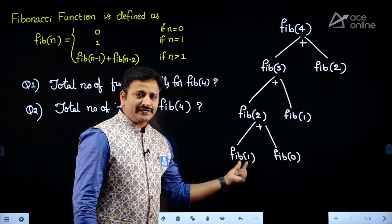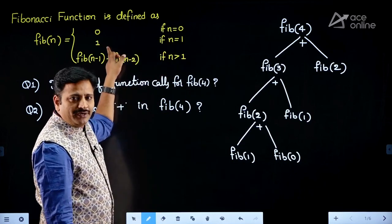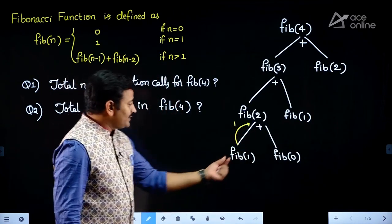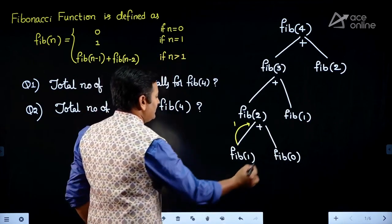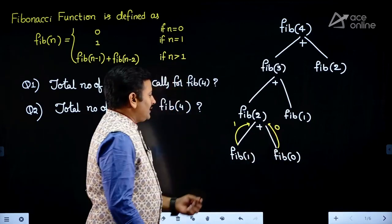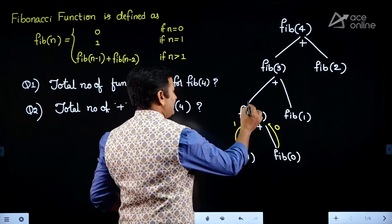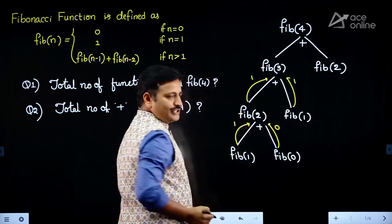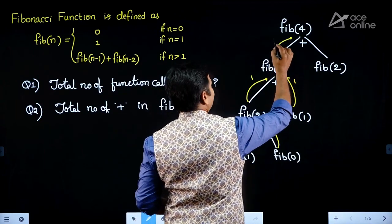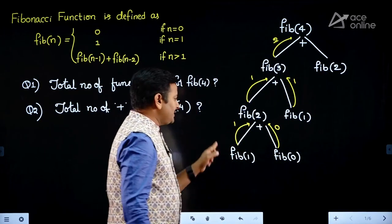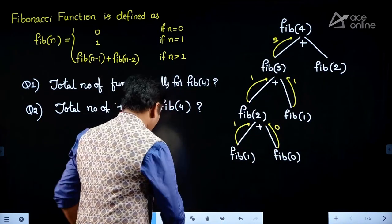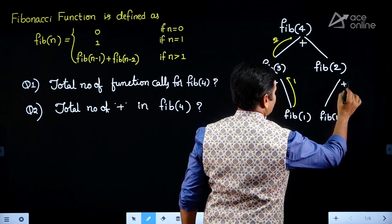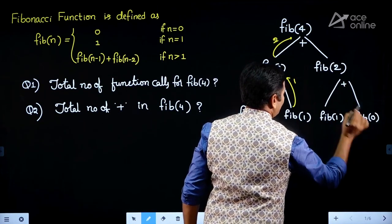As we approach the base condition, whenever n=1, it returns 1. So that function call gives back 1. Afterwards, we call Fib(0), which meets the first base condition and returns 0. The plus operation is then performed between these two: 1 + 0 = 1. When we call Fib(1) again, it returns 1 based on the base condition, so 1 + 1 = 2. Fib(2) again splits into Fib(1) + Fib(0).